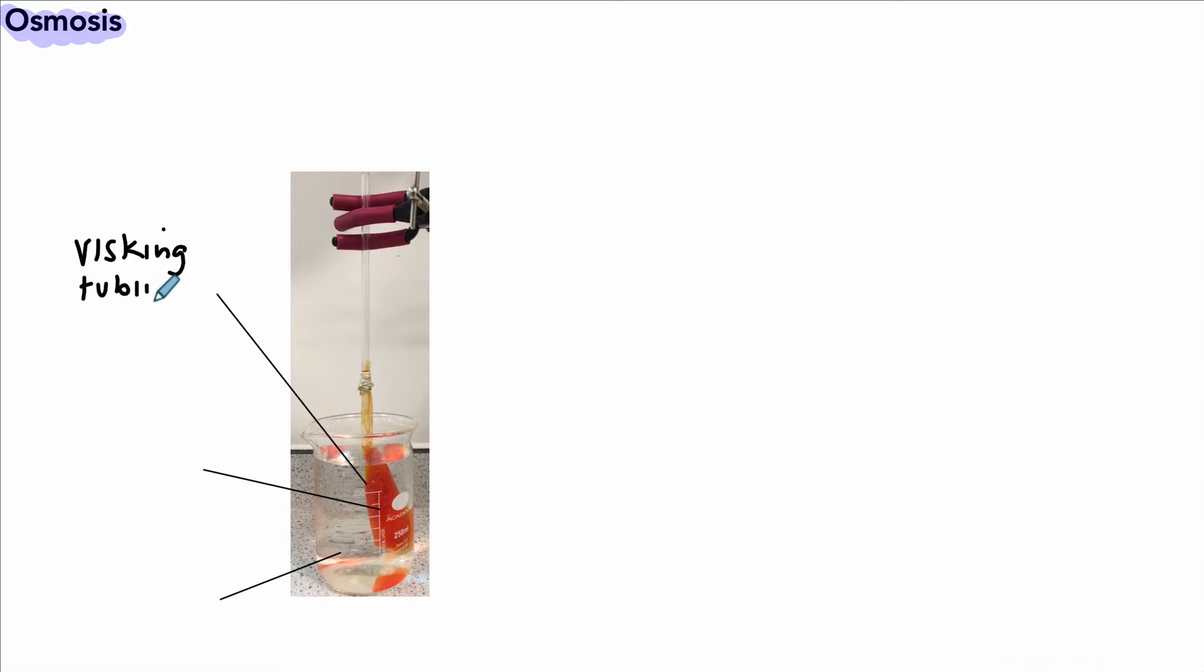Here we've got something called visking tubing. It's a type of plastic tubing that has a specific property - it is partially permeable. That means it will let some substances through but not others. Inside our tubing we have some sugar solution along with some orange food dye so we can see what happens in the experiment.